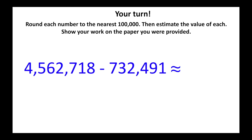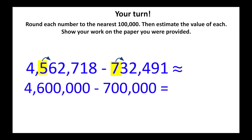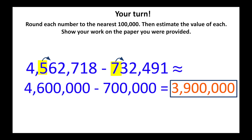Let's try another one — solve this on your own and submit your answer when you're ready. Highlighting the hundred thousands place in both numbers, 4,562,718 should round to 4,600,000, and 732,491 rounds to 700,000. I subtract 7 from 46 hundred thousands — 46 minus 7 is 39, but it's 39 hundred thousands. We have to account for that place value, so I add five zeros and commas to separate the periods. If you submitted 3,900,000, nice job.